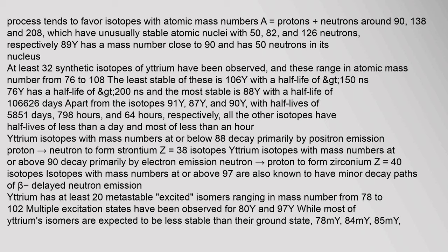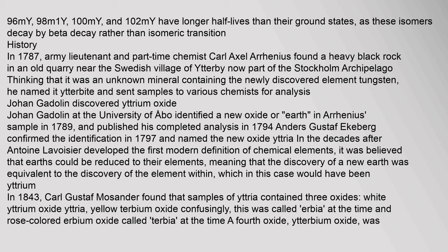At least 32 synthetic isotopes of yttrium have been observed, ranging in atomic mass number from 76 to 108. The least stable of these is 106Y with a half-life of 96 ms. The isomers 98m1Y, 100m1Y, and 102m1Y have longer half-lives than their ground states, as these isomers decay by beta decay rather than isomeric transition.